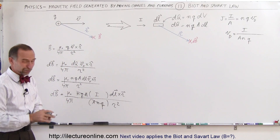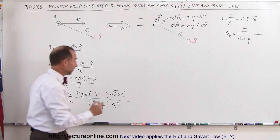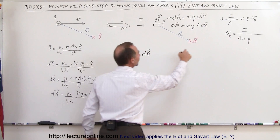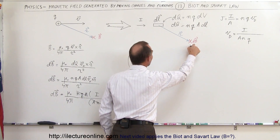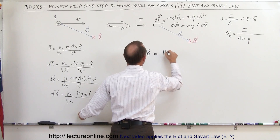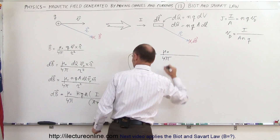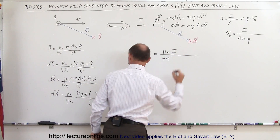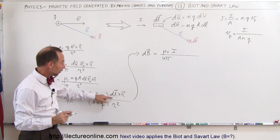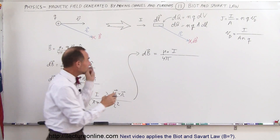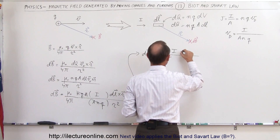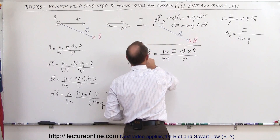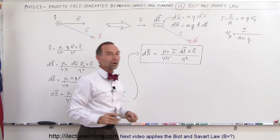Therefore, DB — the magnetic field at that location due to a small current element — is equal to mu-naught divided by 4π, times the current I, times the cross product of the small line segment DL with the unit vector in the direction toward the point of interest, divided by R squared. This is the Biot-Savart Law.